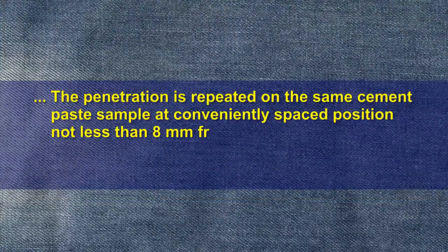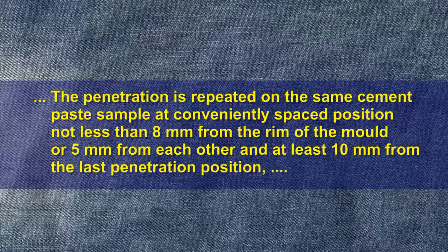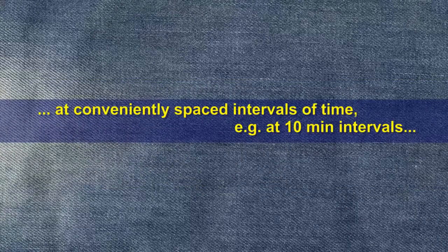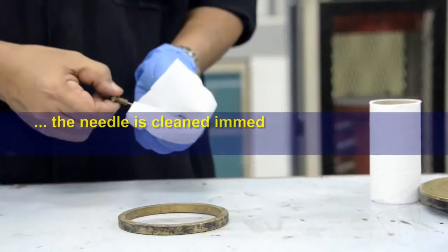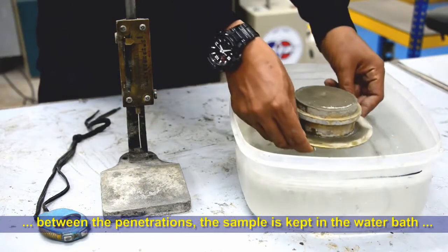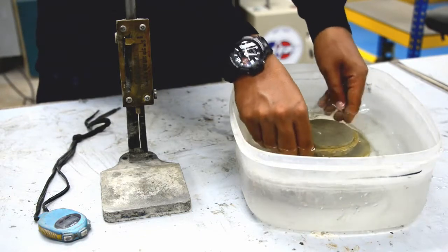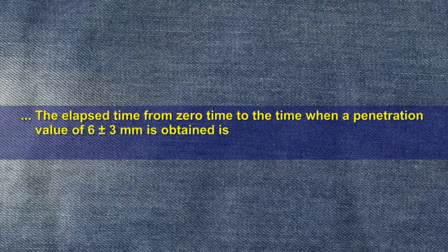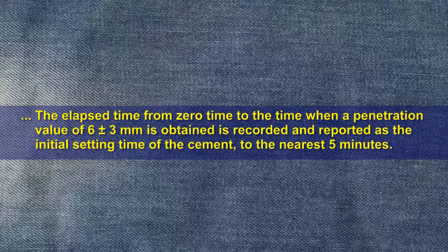Penetration is repeated on the same cement paste sample at conveniently spaced positions, not less than 8 mm from the rim of the mould, at least 5 mm from each other, and at least 10 mm from the last penetration position. Measurements are taken at conveniently spaced intervals, for example at 10-minute intervals. The needle is cleaned immediately after each penetration, and between penetrations the sample is kept in the water bath. The elapsed time from zero time to the time when a penetration value of 6 ± 3 mm is obtained is recorded and reported as the initial setting time of the cement, to the nearest 5 minutes.